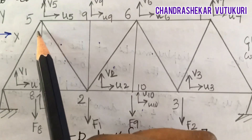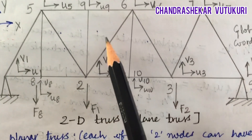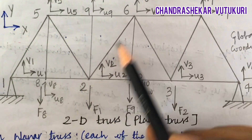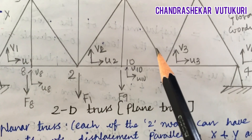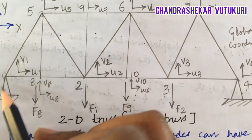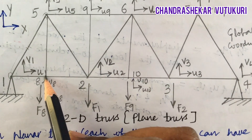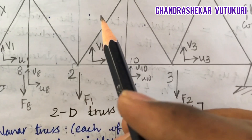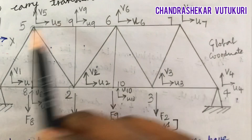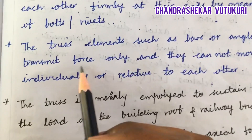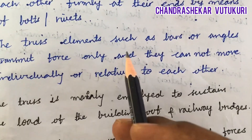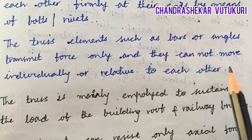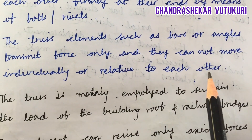If you look here, a truss is a structural member constructed by bars. These bars are connected to each other with the help of bolts or rivets. It may be a temporary joint or it may be a permanent joint. This is nothing but a truss — the structure which I have kept on the paper here. The truss elements such as bars or angles transmit force only and they cannot move individually or relative to each other.